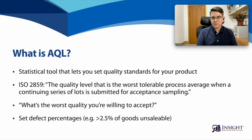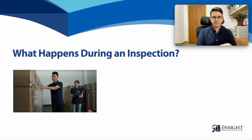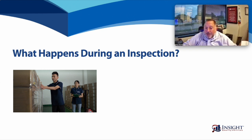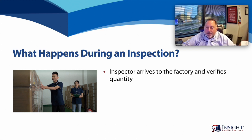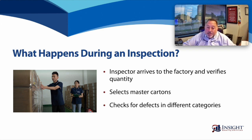During an AQL inspection, an inspector arrives at the factory, and we have a formula for them to verify the quantity of the lot to be inspected. The inspector selects master cartons for sampling and checks for defects in various categories, such as packaging and labeling, visual inspection, functional testing, physical requirements and measurements, and any other special tests that may need to be done.